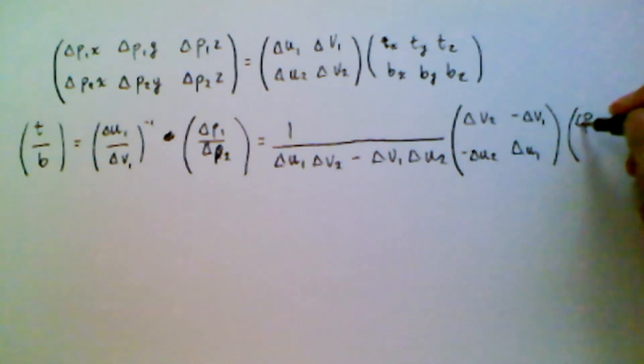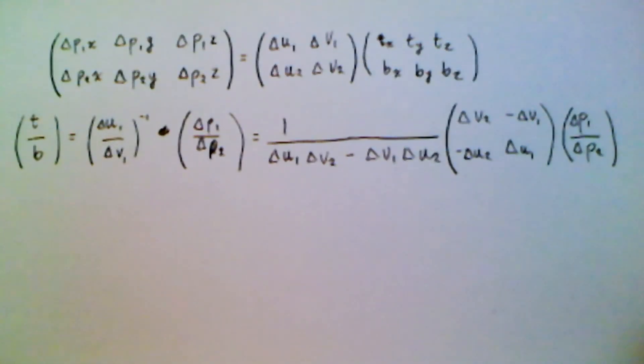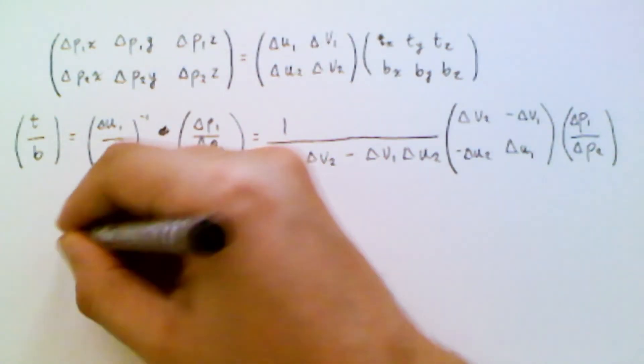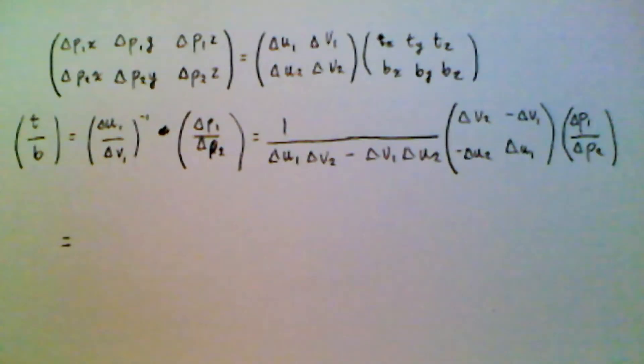Then multiply that by this matrix here, which is, again, I'll just note, compact that. Cool, so that's the expression, but if we wanted to write it out by hand, because we will have to calculate it, right? This is how we do it.